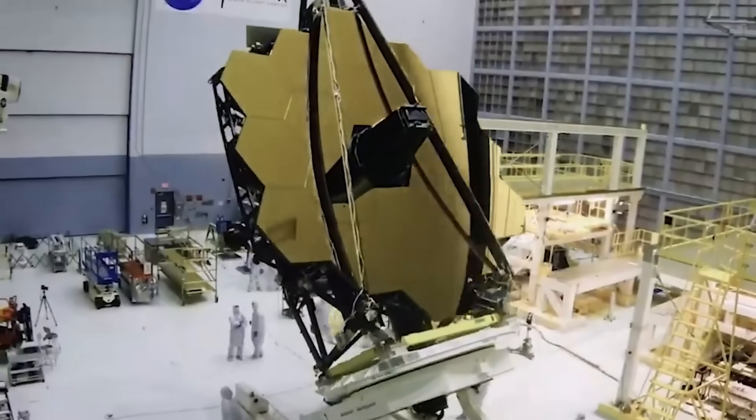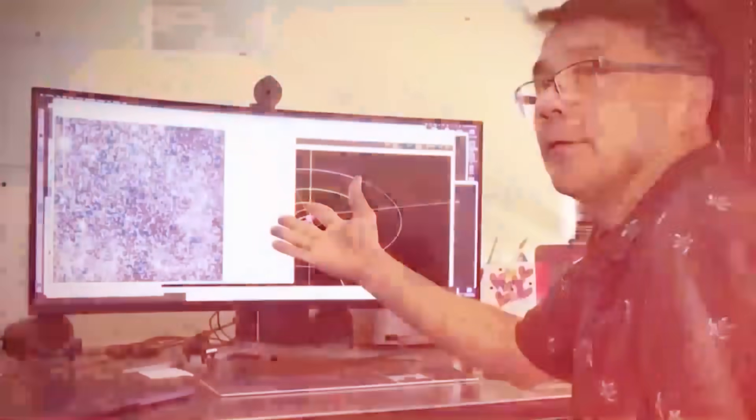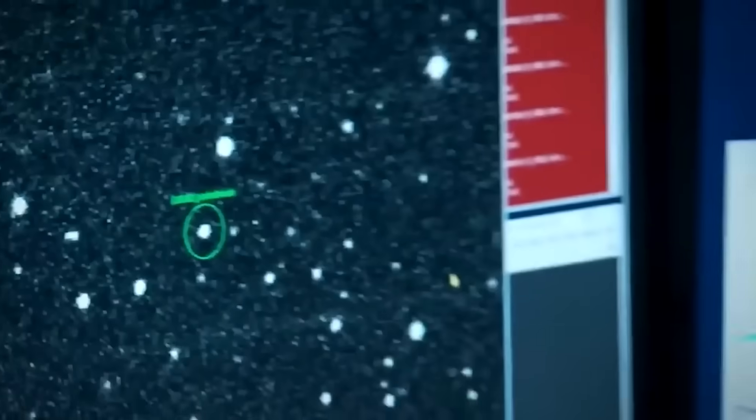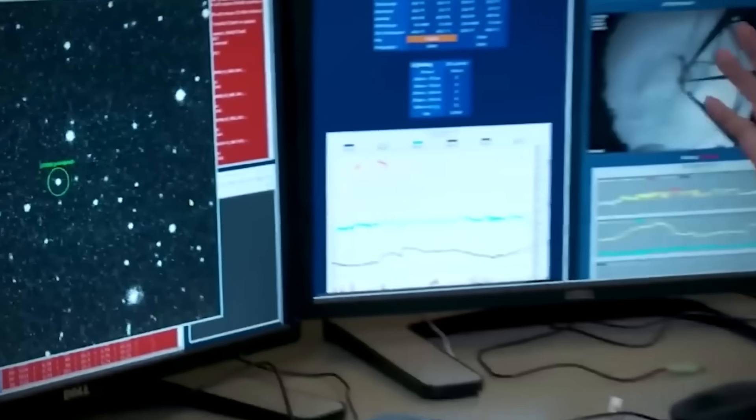They don't just take a picture, they analyze the light, breaking it down to determine the comet's composition, temperature, and the velocity of the gases spewing from its nucleus. This level of detail is critical for predicting its path.